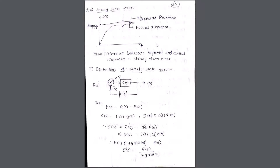The steady state error: if you see here, the step input is one curve whereas the response obtained is another. There is a slight difference between the input and the response — that difference is nothing else than the steady state error. So the steady state error is the difference between the expected response and the actual response.